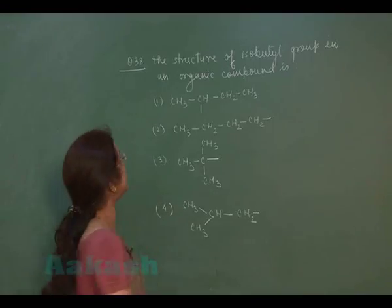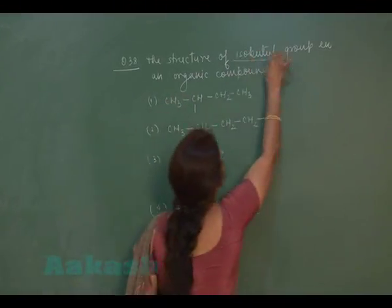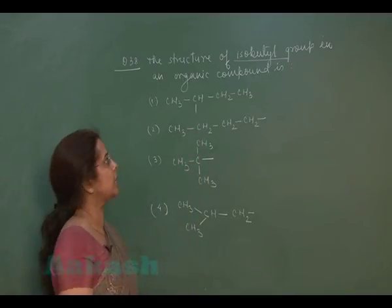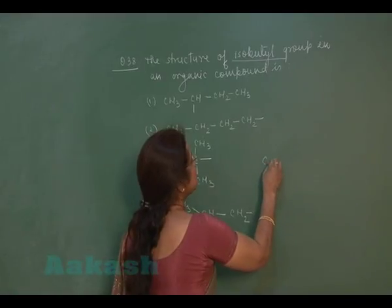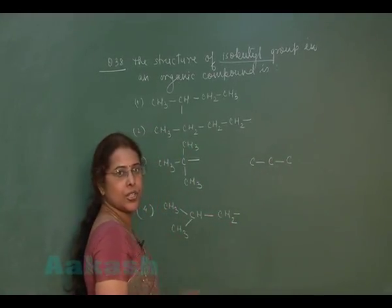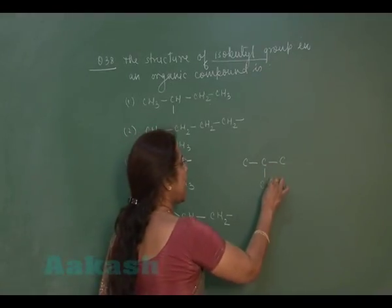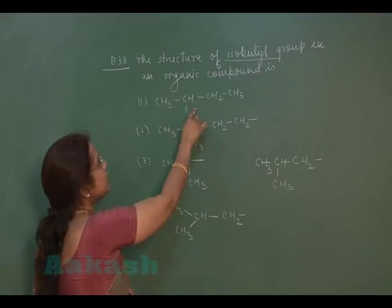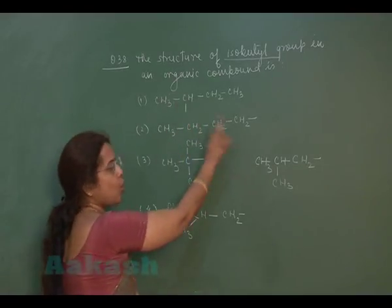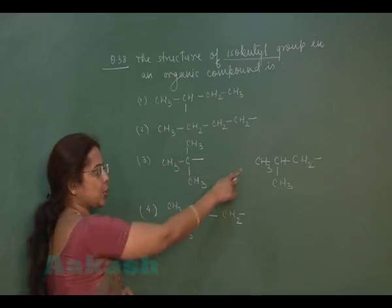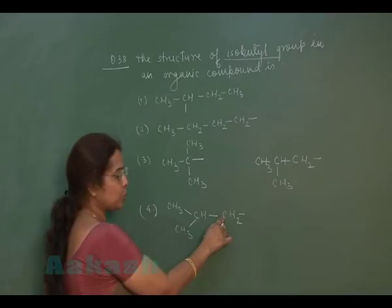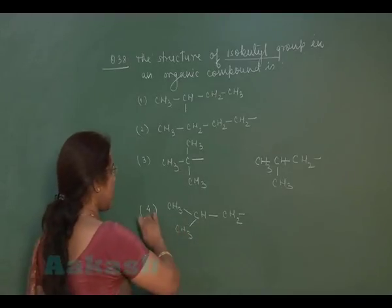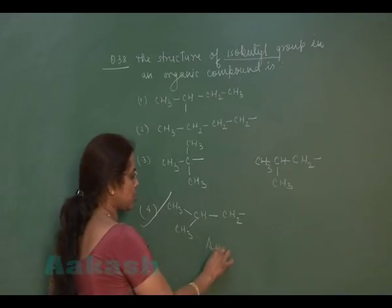Question 38: The structure of the isobutyl group in an organic compound. Isobutyl means there should be 4 carbon atoms and the second carbon atom must have a methyl group. Checking the options: one is secondary butyl, one is normal butyl, one is tertiary butyl, and the fourth has a 3-carbon chain with a methyl group attached to the second carbon — this is the structure of the isobutyl group. The answer is option 4.